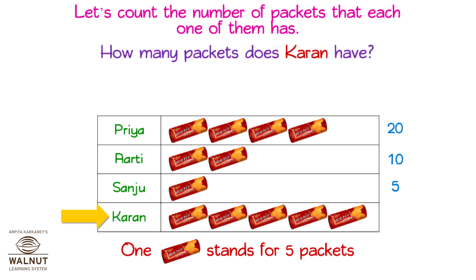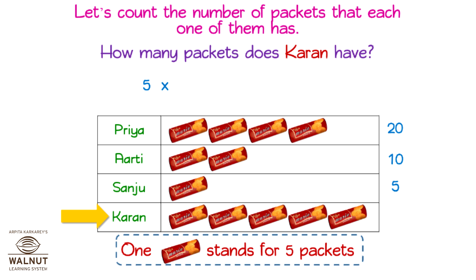How many packets does Karan have? This is where we see Karan's entry. There are five symbols, so five into five packets is equal to twenty-five packets. Let's write that down in the table.